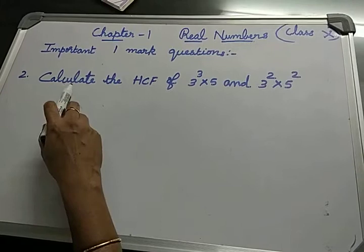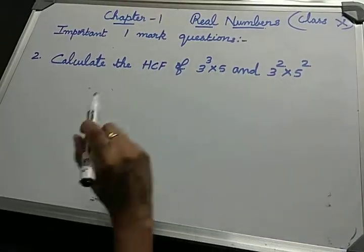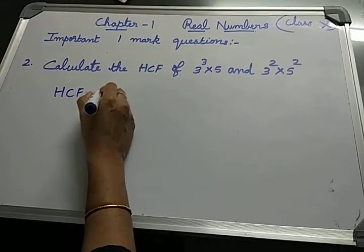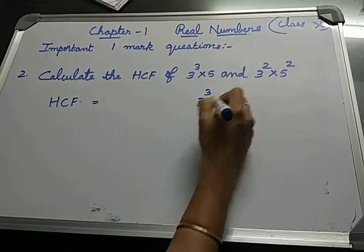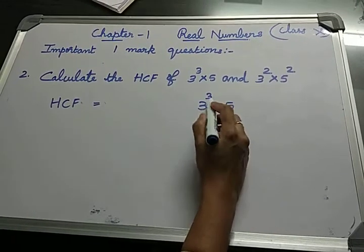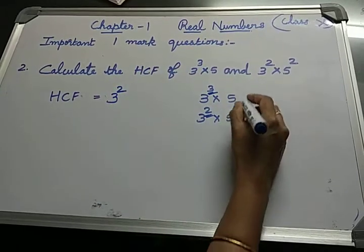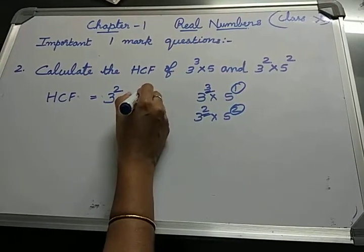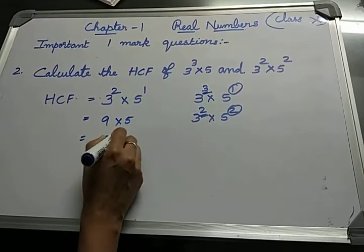Second question: Calculate the HCF of 3³ × 5 and 3² × 5². We know for HCF we write the smallest power. The power of 3, the smallest is 2. So HCF will be 3². For 5¹ and 5², the smaller is 1, so 5¹. The HCF will be 9 × 5 which equals 45.